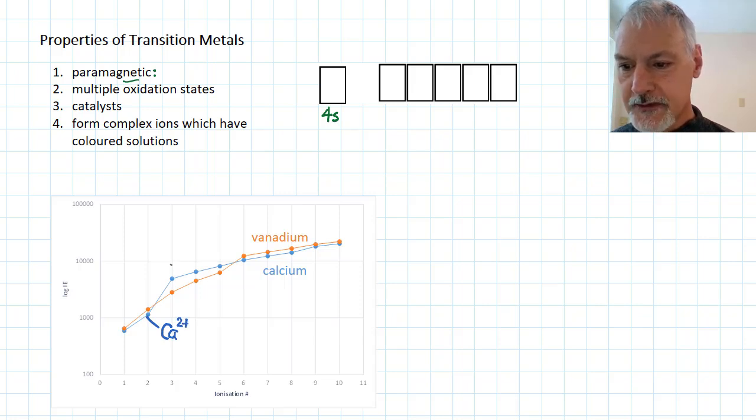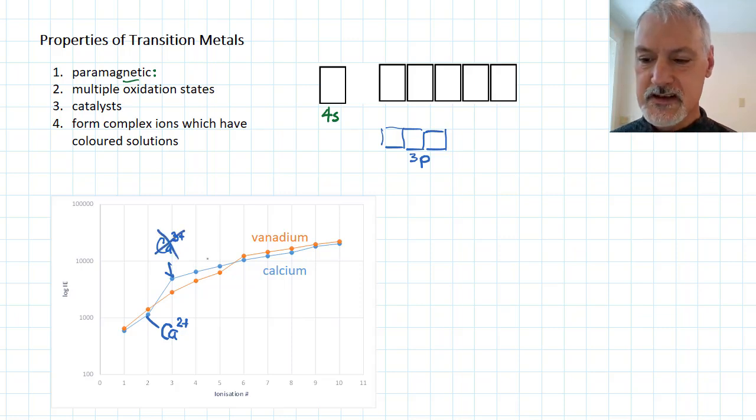To form calcium with a 3 plus charge, we would have to reach down into an energy level that would be down here, which would be the 3p energy level. It's a whole energy level closer to the nucleus. As a result, to remove this electron, there's that huge jump in ionization energy. So as a result, calcium only tends to have, or exhibit, one charge, 2 plus.